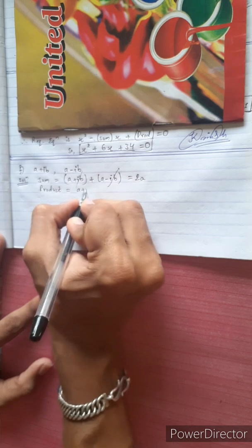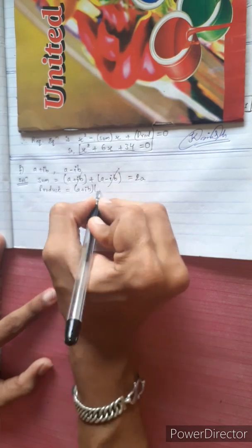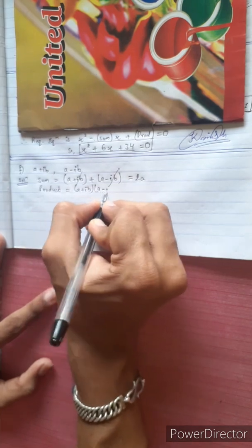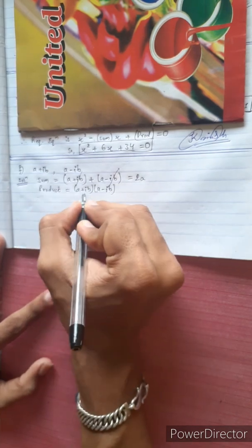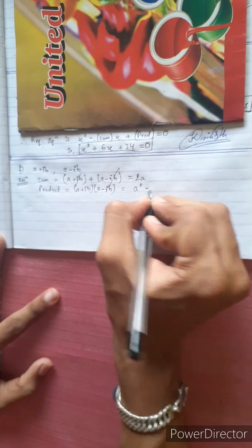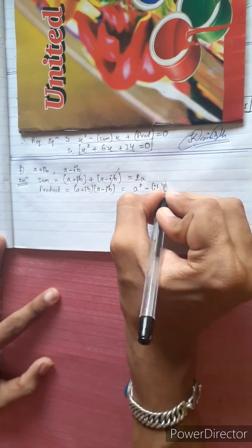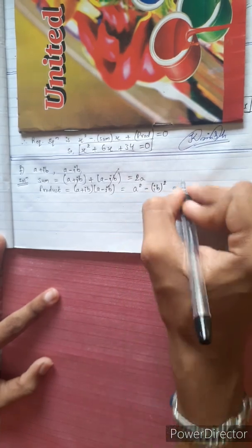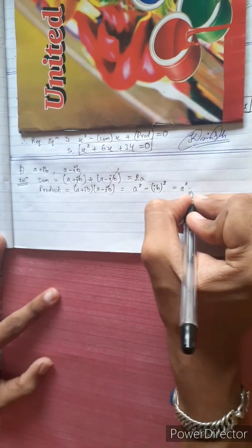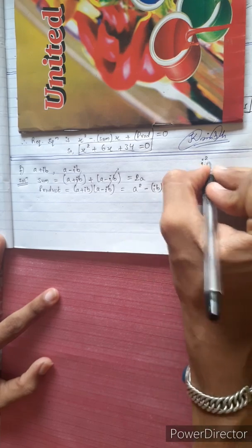Product of roots equals (a + ib)(a - ib). Using the identity (a + b)(a - b) = a² - b², this becomes a² - i²b², and since i² = -1, this equals a² + b².